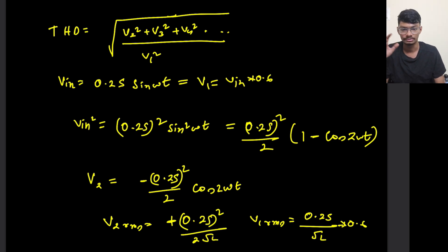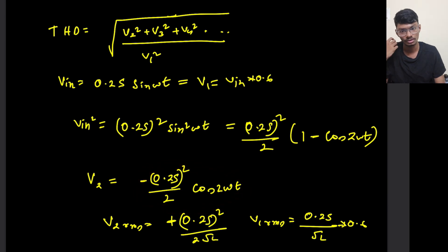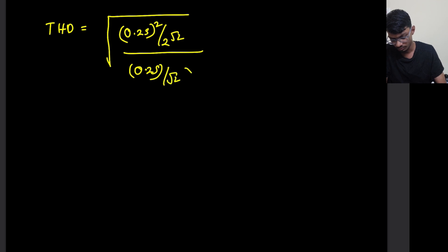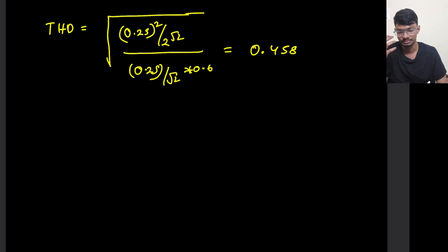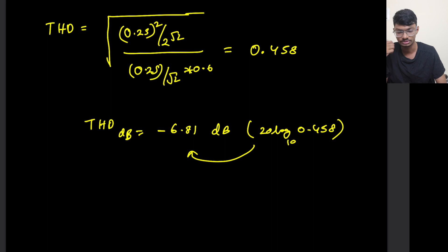The DC values are not harmonics, so we only consider the second harmonic. Plugging into the THD formula: THD = [(0.25)² / (2√2)] / [0.6 · (0.25 / √2)] ≈ 0.458, or about 45.8%. Converting to decibels: THD_dB = 20·log₁₀(0.458) ≈ −6.81 dB.